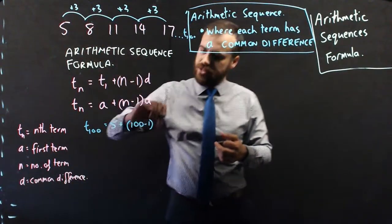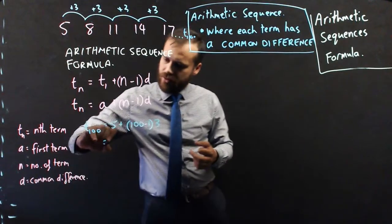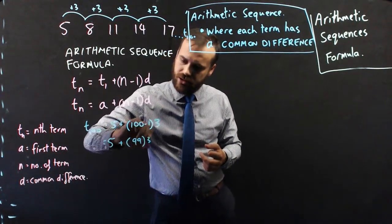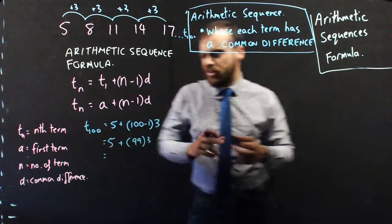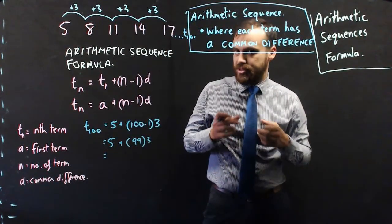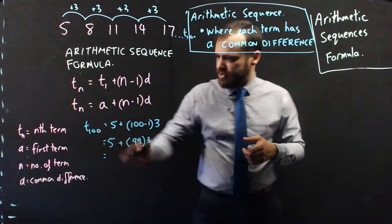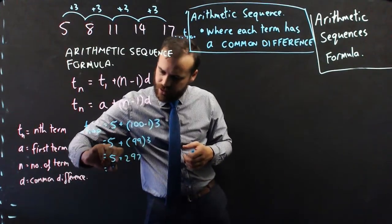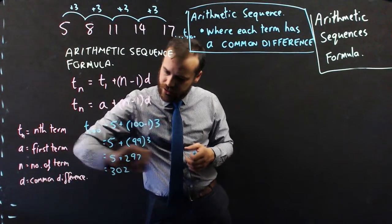d is the common difference. In this case, it's 3. So, now we have 5, plus 99 times 3. 99 times 3 is 297, plus 5, so 5 plus 297, is 302.